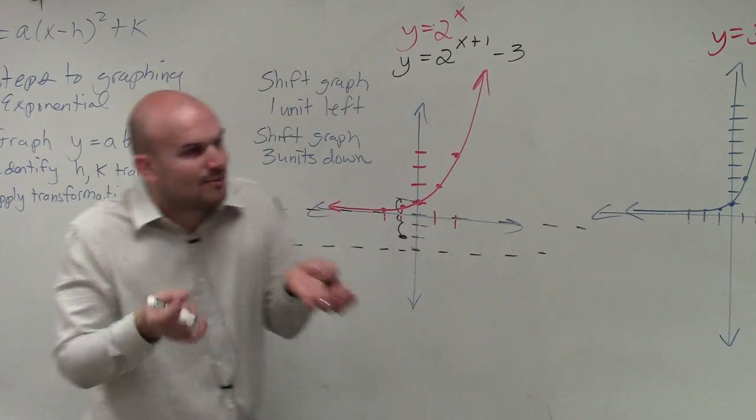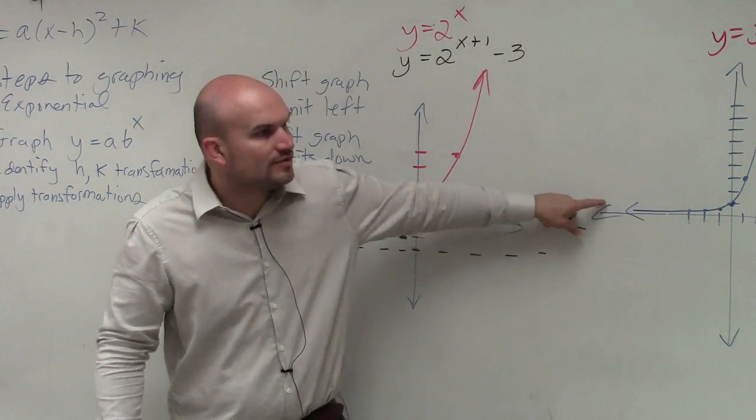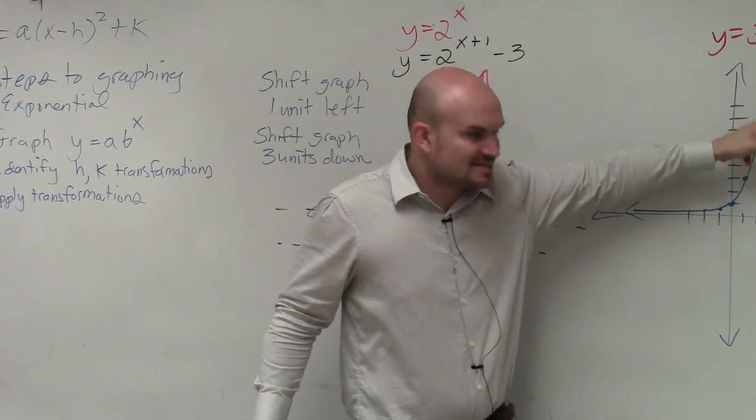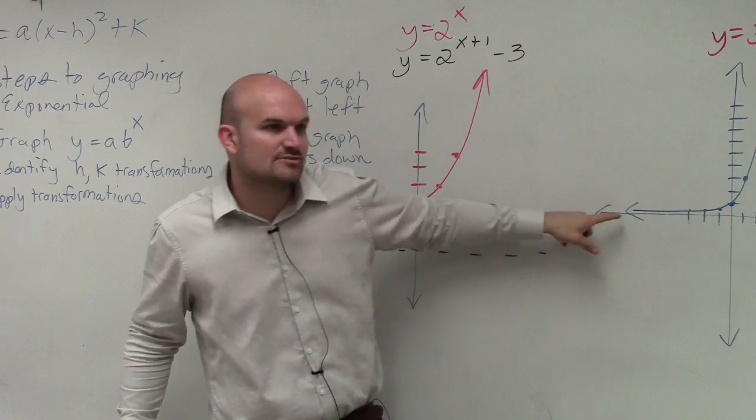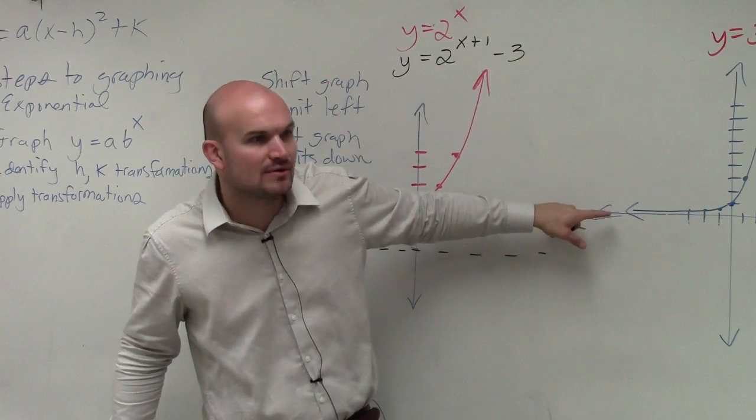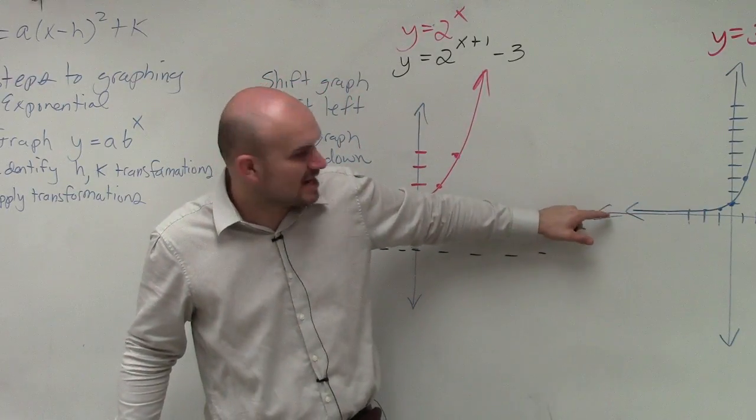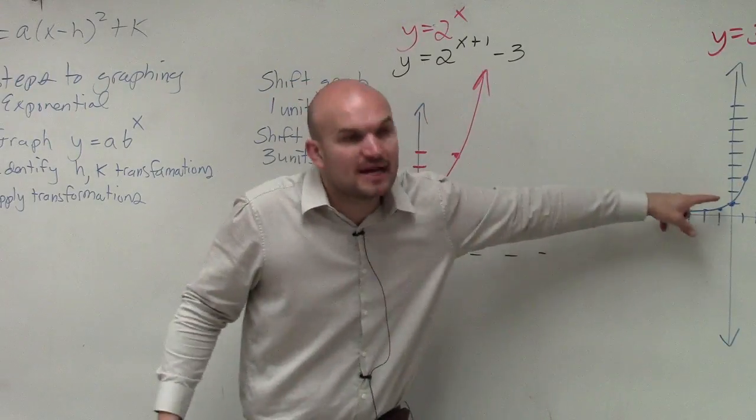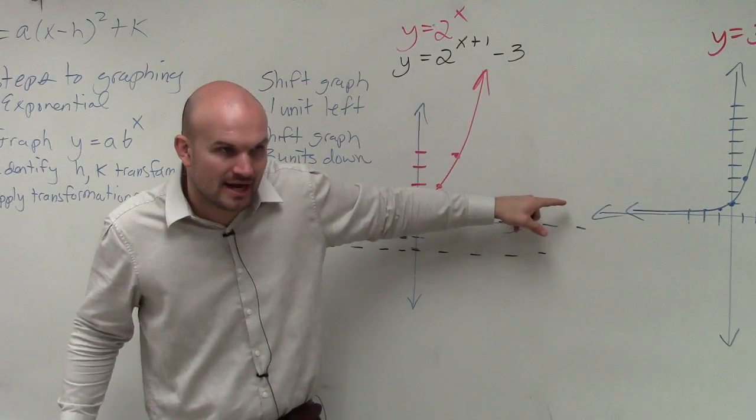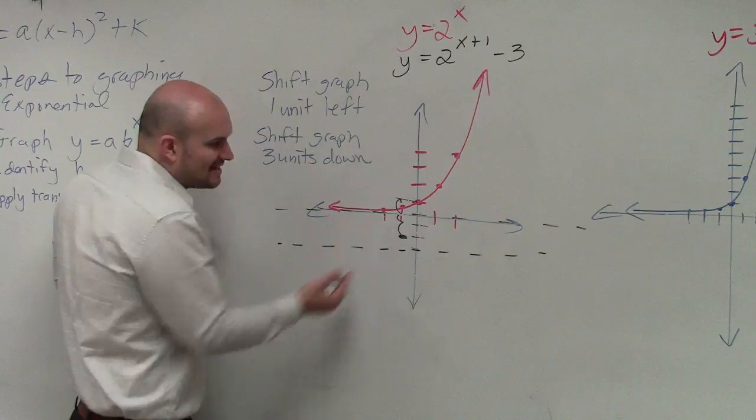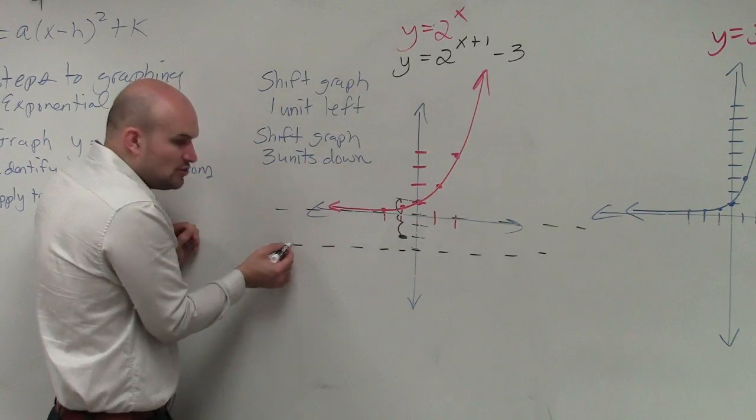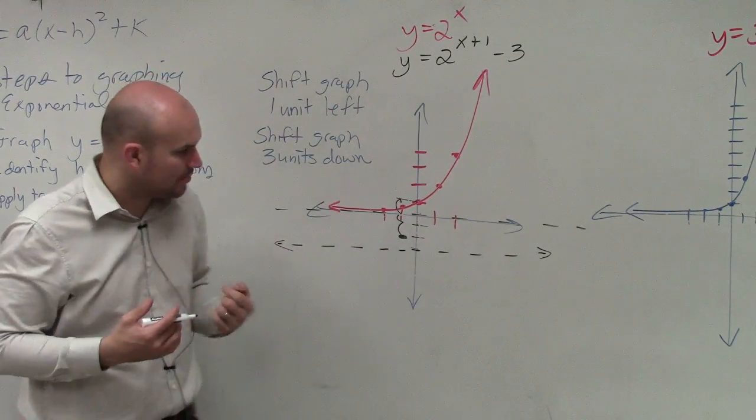The reason why it's important to have that horizontal asymptote is because this graph, as you guys can see, approaches the asymptote at zero. Remember we talked about it does not cross, Jasmine? It does not cross zero. It keeps on approaching this asymptote. So in the same respect, this graph is going to keep on approaching this asymptote. It's never going to intersect the asymptote.